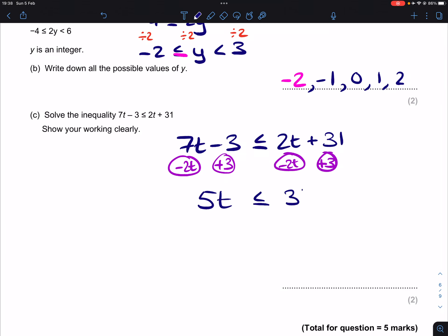And then when you divide both sides by 5, you're going to end up with 6.8, so t is less than or equal to 6.8.